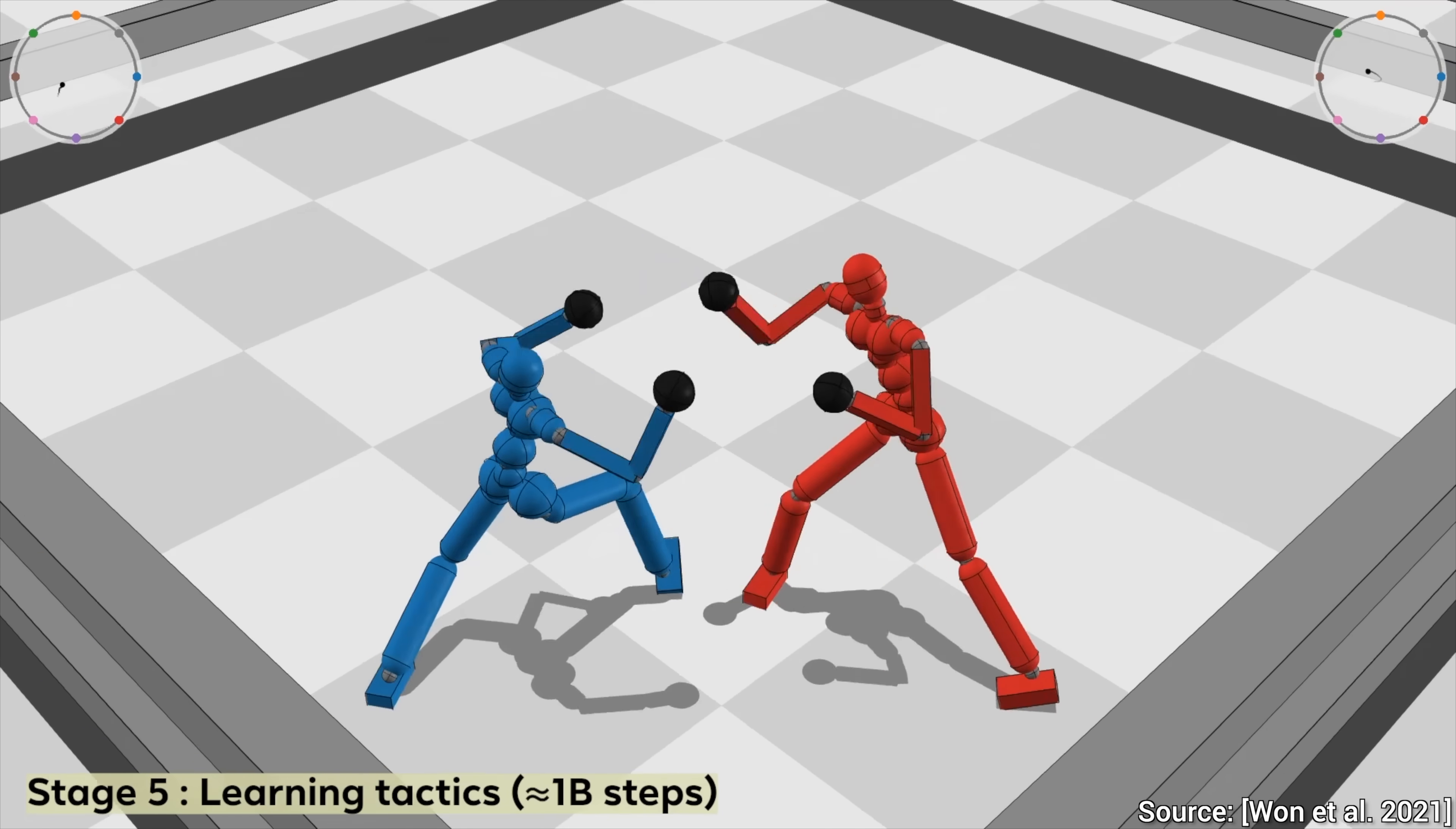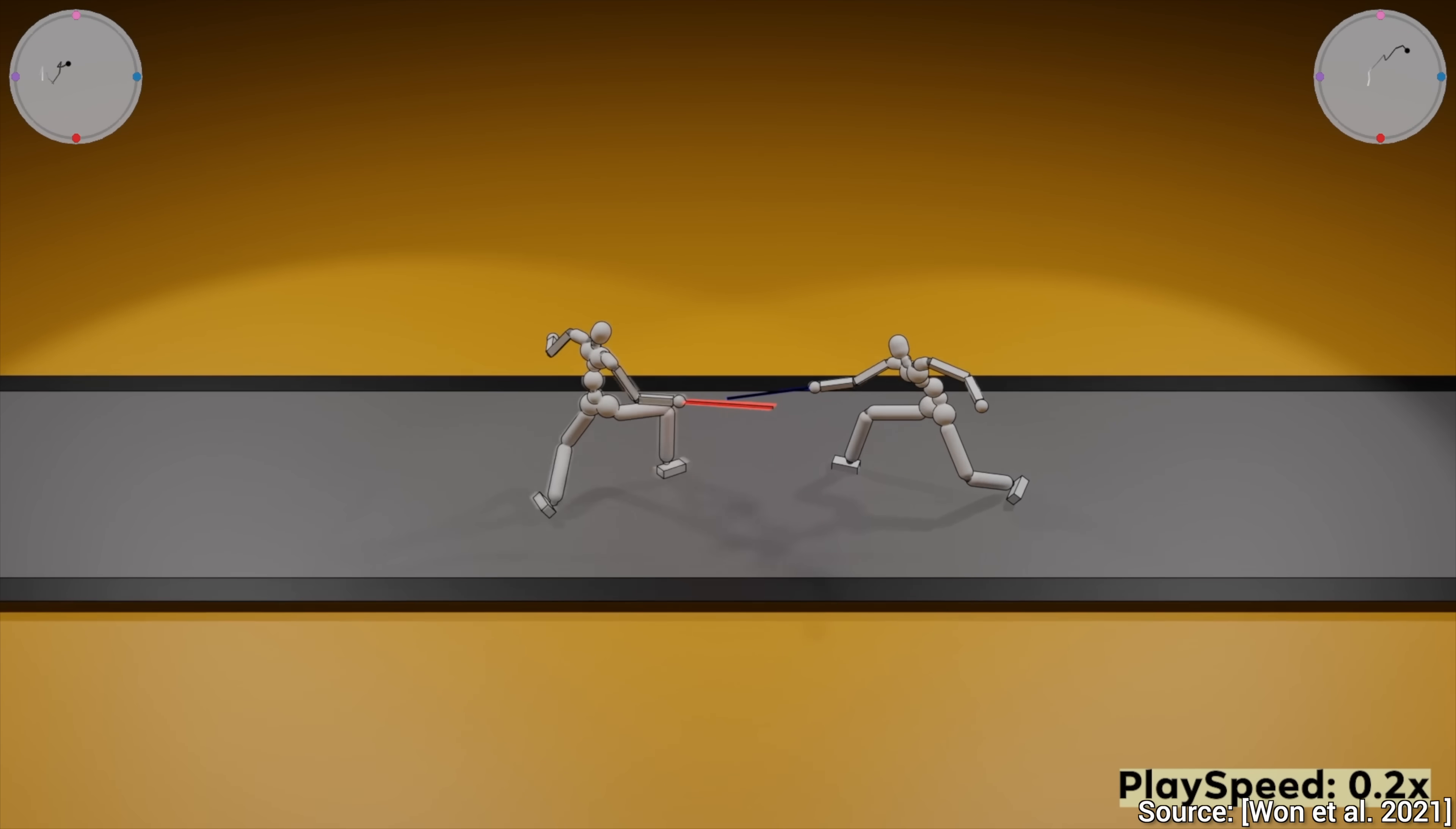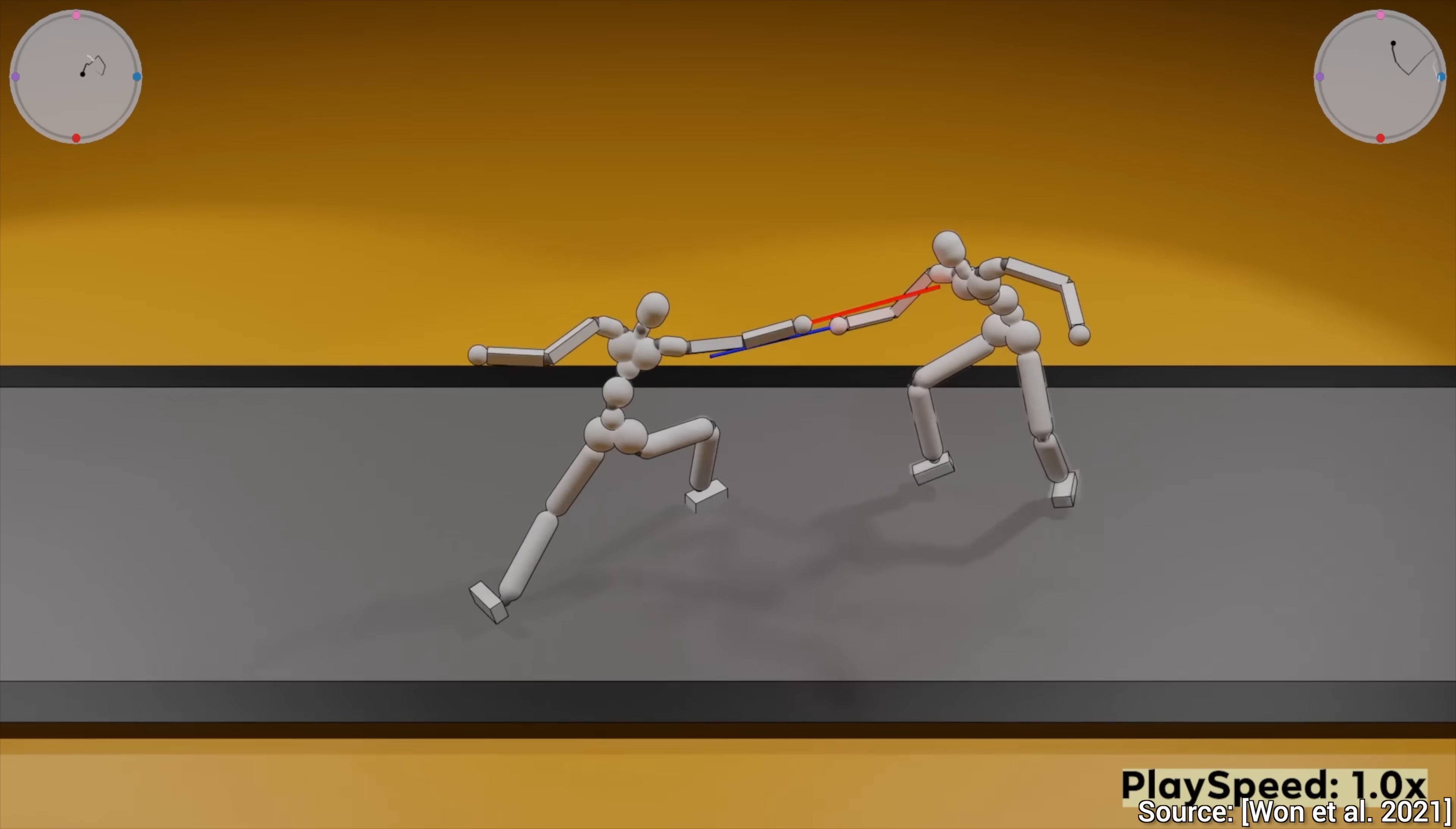And this is a general framework that also works for fencing as well. Look, the agents learned to lunge, deflect, evade attacks, and more. Absolutely amazing! What a time to be alive!